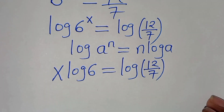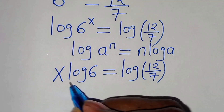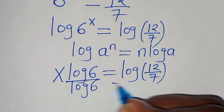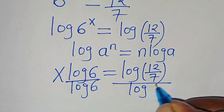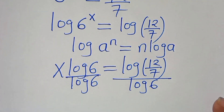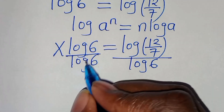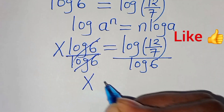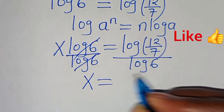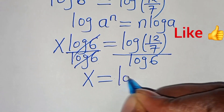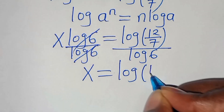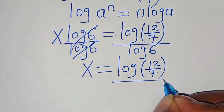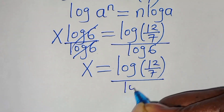So let's divide both sides by log 6. We simplify log 6 and log 6, so that now x is equal to log(12/7) divided by log 6.